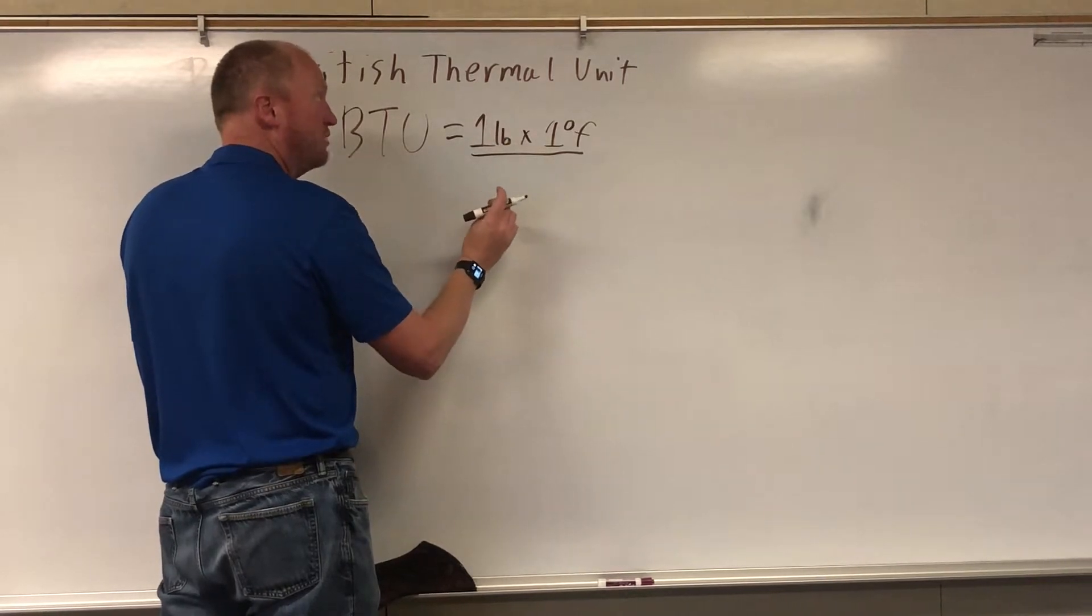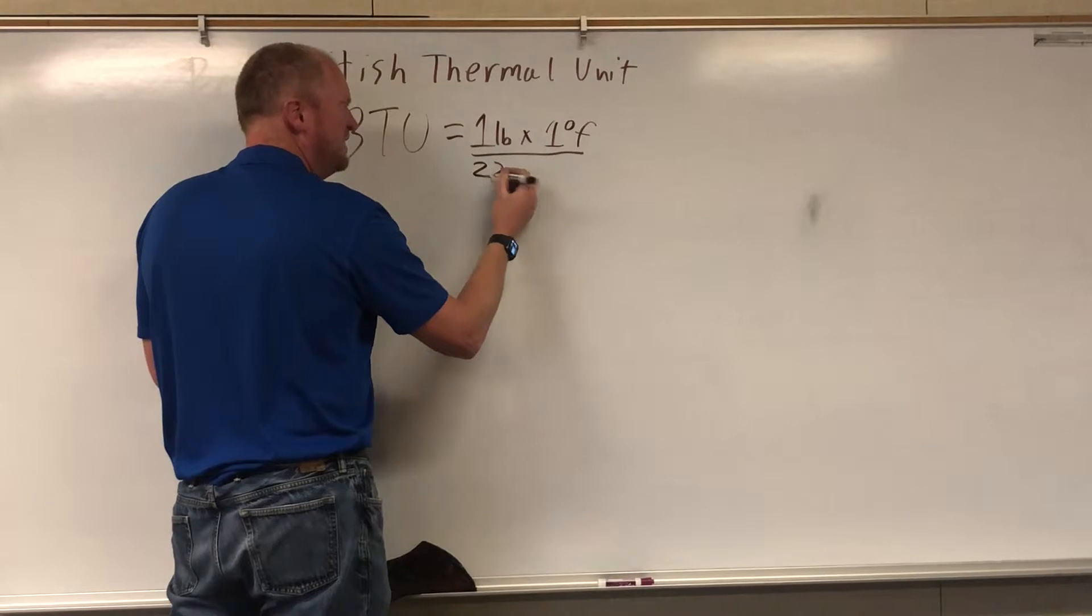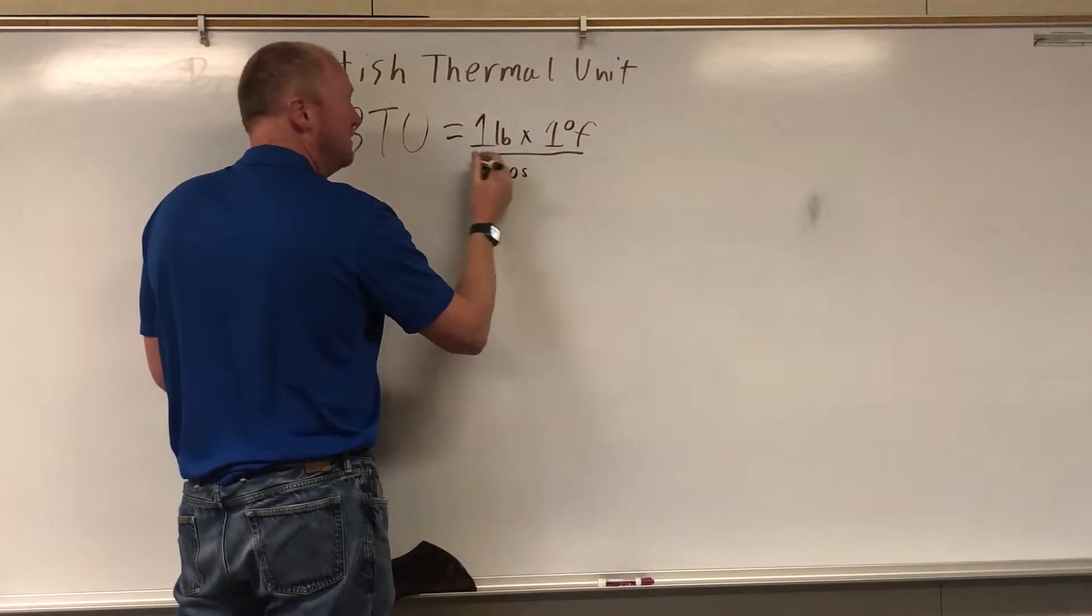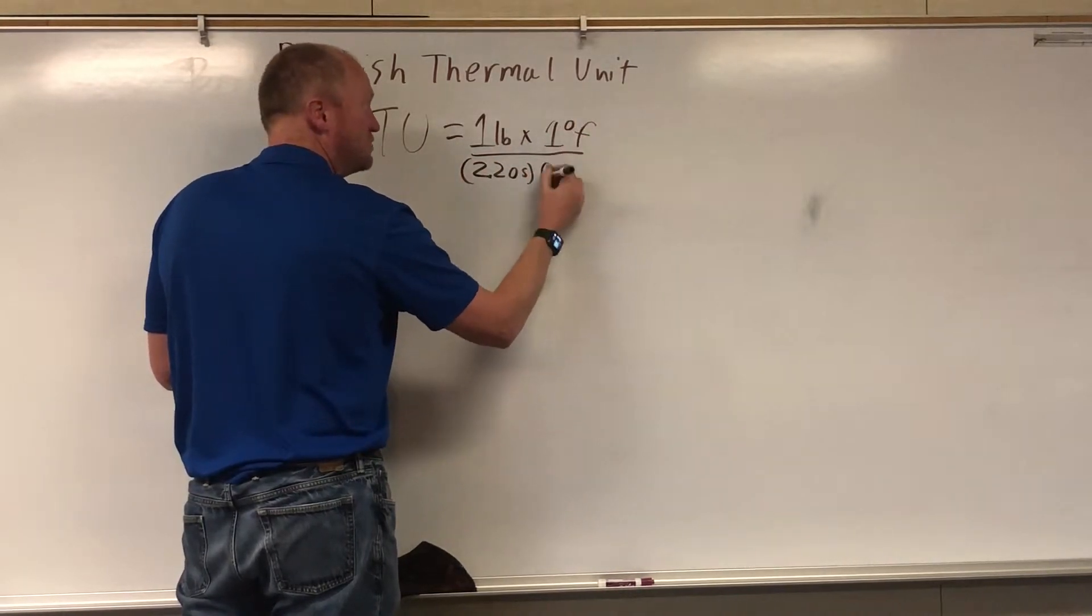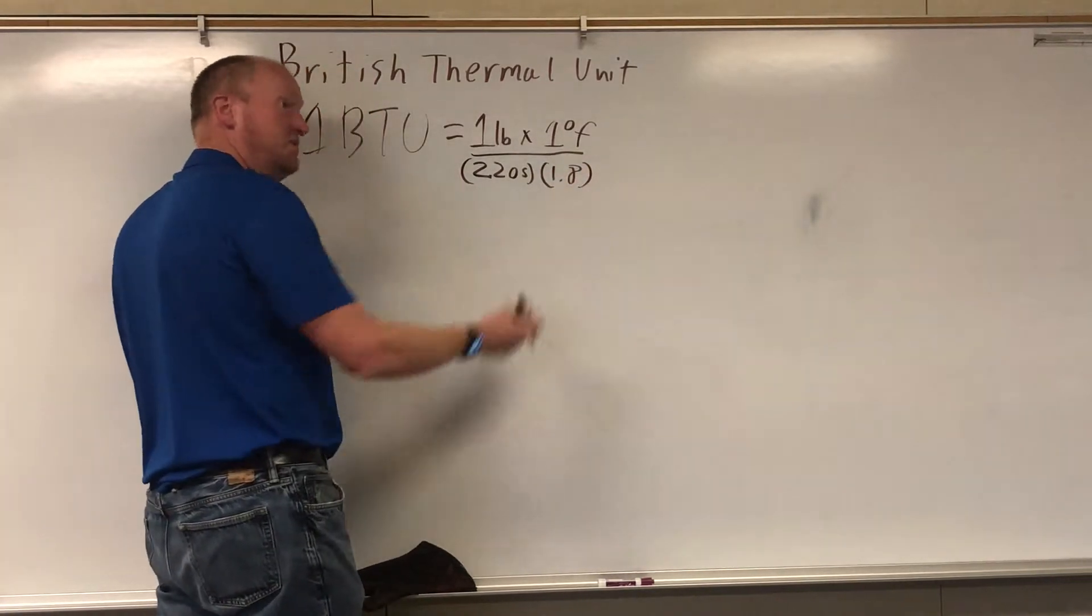So there's 2.2 pounds in a kilogram, so divide by 2.2, and it's 2.205. And since there is 1.8 degrees Fahrenheit in a degree Celsius, divide by 1.8.